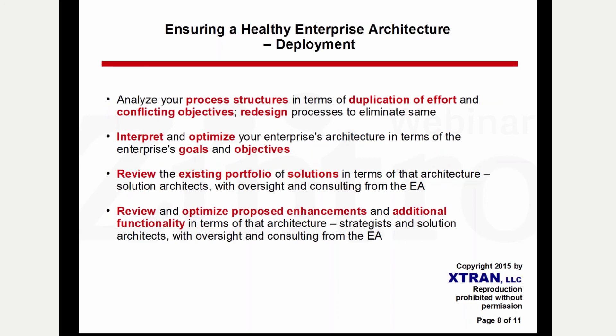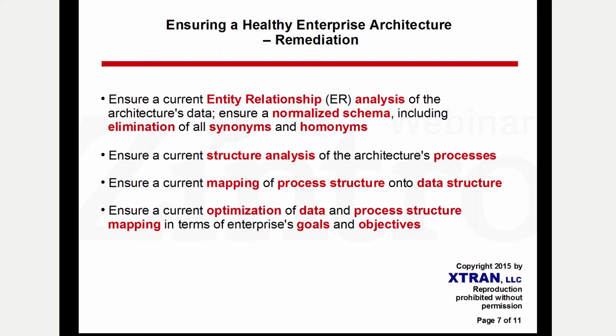So you've done your assessment and things aren't exactly where you'd like them to be. How do you remediate? The first thing you need to do is make sure there is a current and up-to-date entity relationship analysis of the enterprise's data architecture. Make sure it's normalized, and that includes the elimination of synonyms and homonyms. Synonyms are different terms for the same entity or attribute; homonyms are the same term for different entities and attributes — both cause confusion. You typically find them in silos, which most enterprises that have been around a while have.